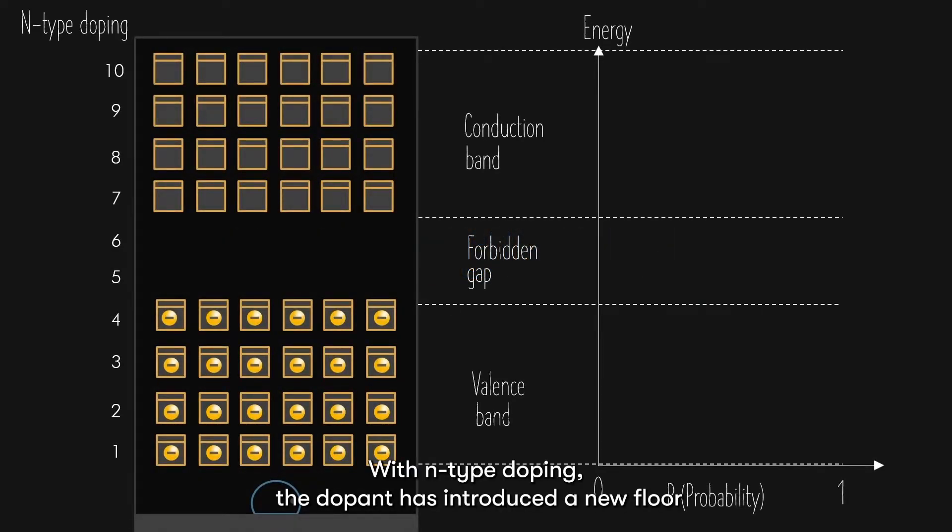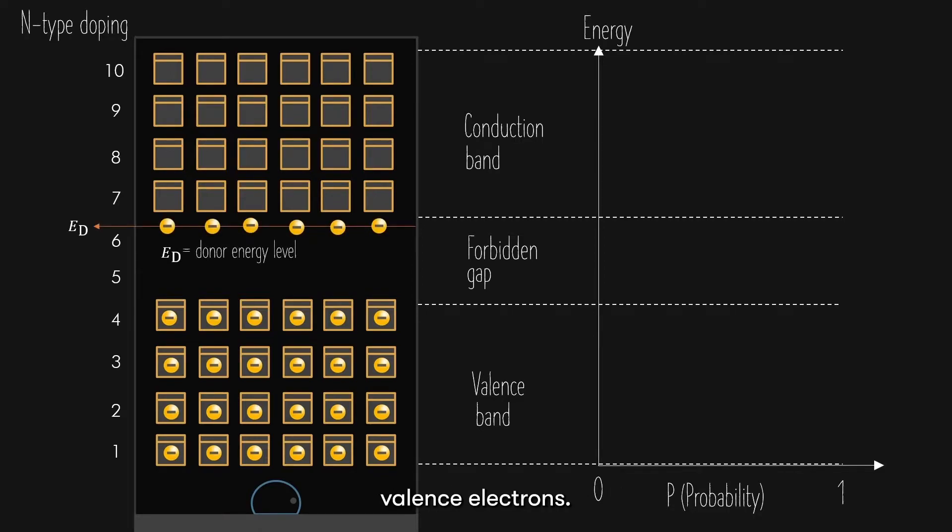With n-type doping, the dopant has introduced a new floor consisting of all the extra 5th valence electrons. This floor, denoted as E subscript D, representing the donor energy level, is located just right below the bottom of the conduction band, I would say at a hypothetical 6.5th floor.